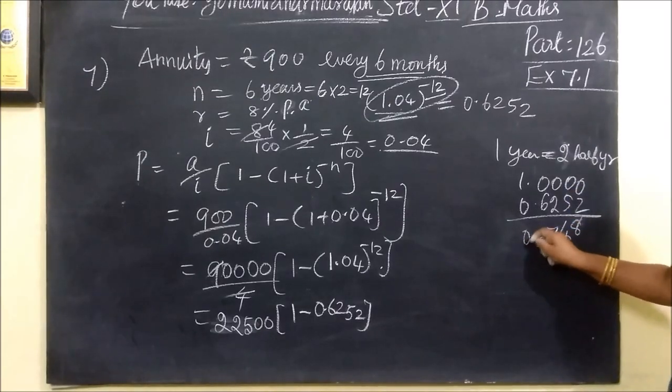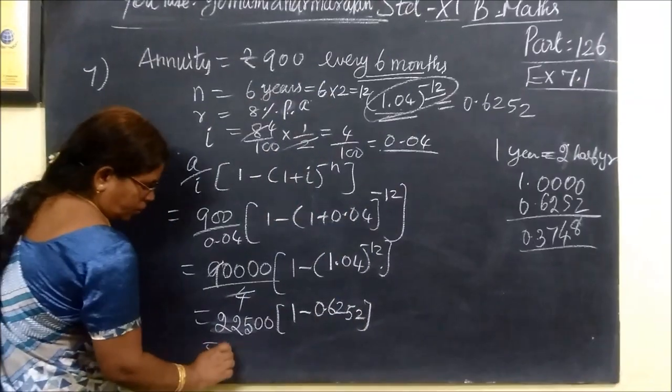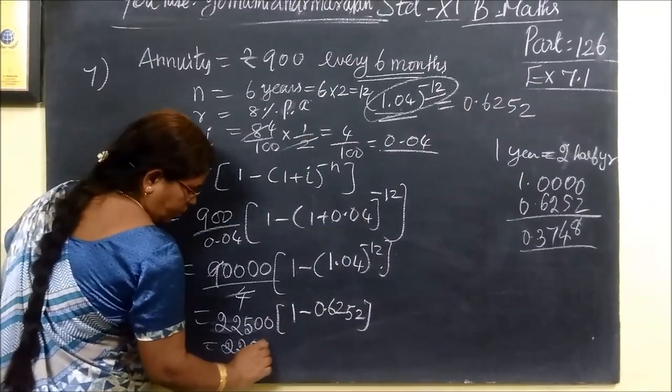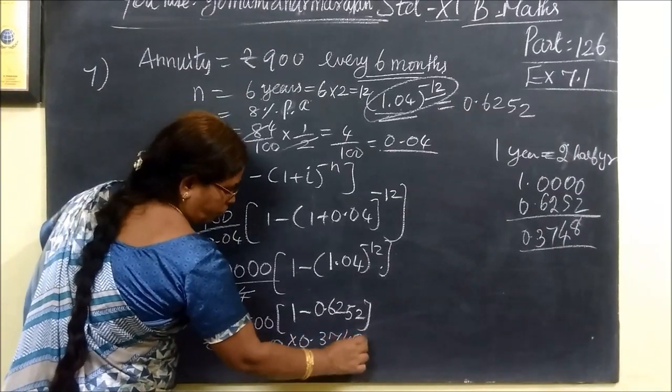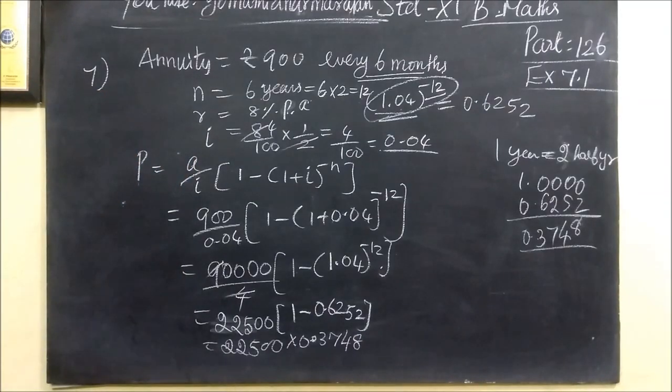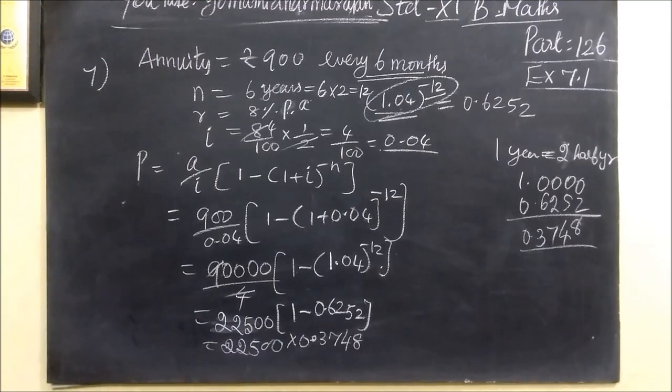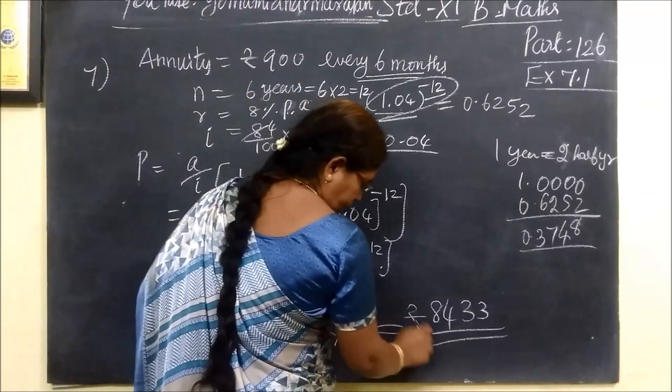So 2250 into 0.3748. If you multiply you are getting the answer 8,433.